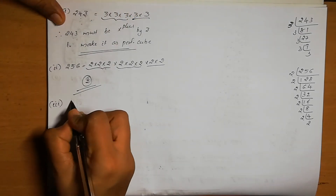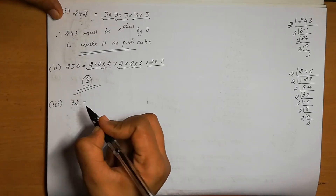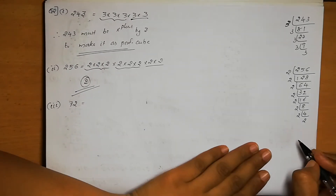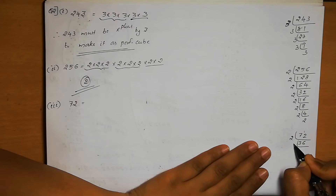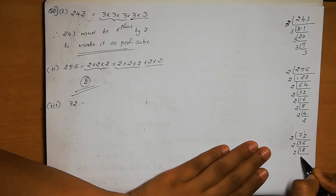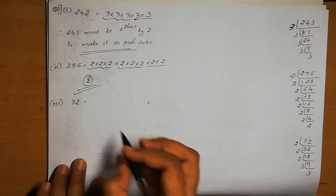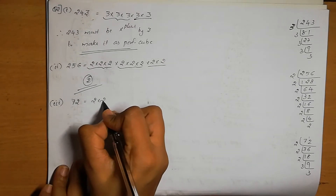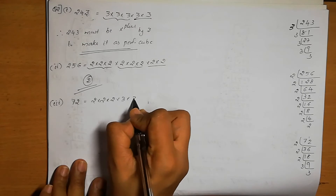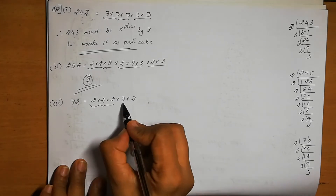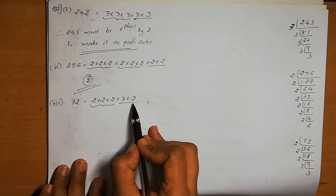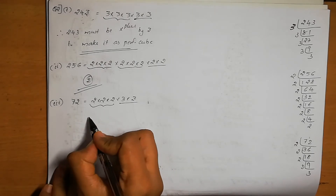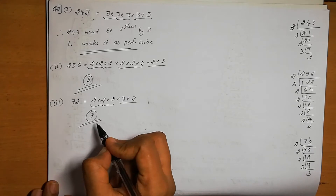Third number is 72. Its prime factors are 2 × 2 × 2 × 3 × 3. The three 2s form one triplet, but the pair of 3s is missing one element. Therefore, 72 must be multiplied by 3 to make it a perfect cube.